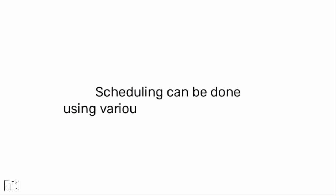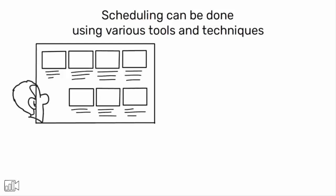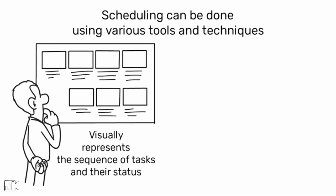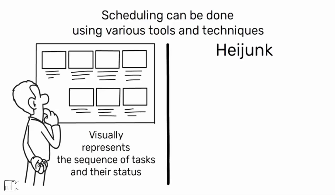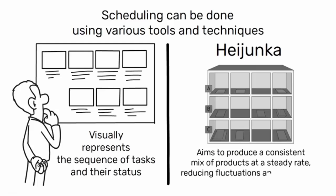Scheduling can be done using various tools and techniques. One common method is the use of a scheduling board, which visually represents the sequence of tasks and their status. Another technique is heijunka, or production leveling, which aims to produce a consistent mix of products at a steady rate, reducing fluctuations and overburden.